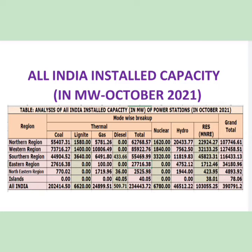There are five main regions: northern, western, southern, eastern, and northeastern regions and islands. There is also a mode-wise break-up. If you look at the mode-wise break-up, there are four constituents: thermal, nuclear, hydro, and renewable energy resources.